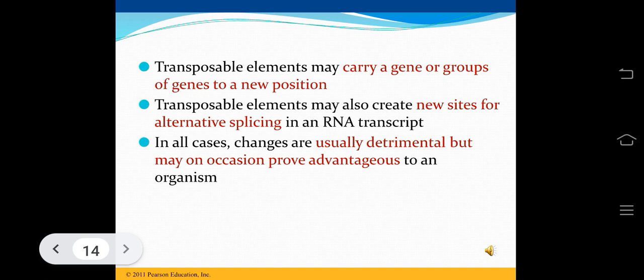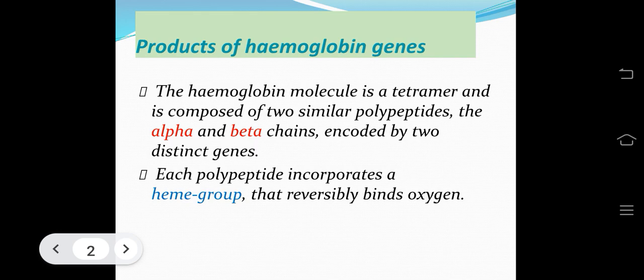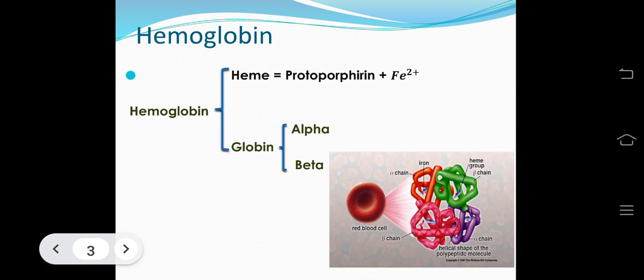A developmentally controlled complex multi-gene family example is the human globin gene cluster. The hemoglobin molecule is a tetramer composed of two alpha and two beta polypeptides encoded by two distinct genes. Each polypeptide incorporates a heme group — containing protoporphyrin plus Fe²⁺ — that reversibly binds oxygen. The alpha chain has a helical shape.